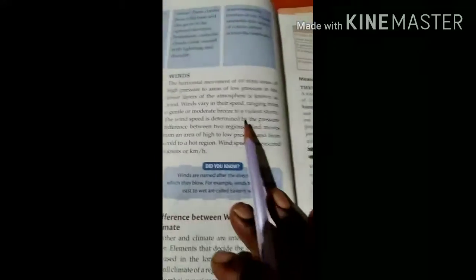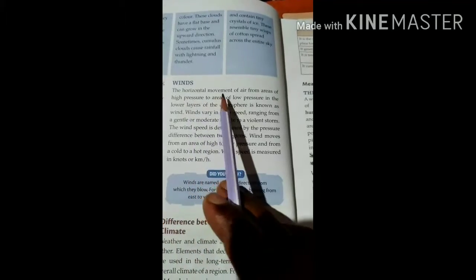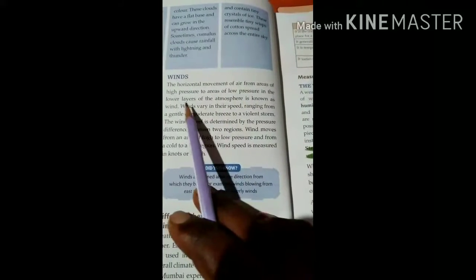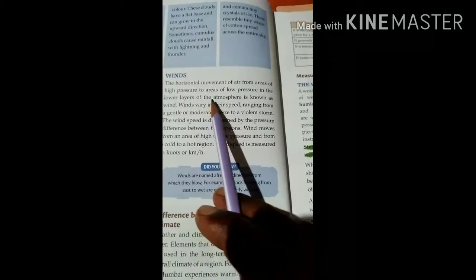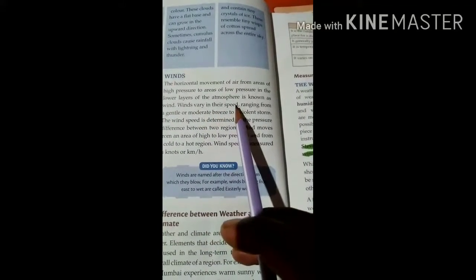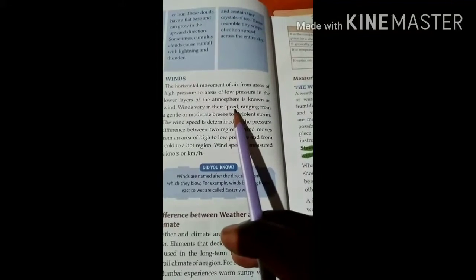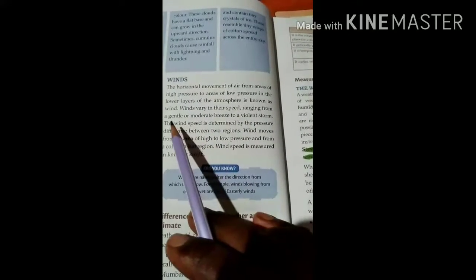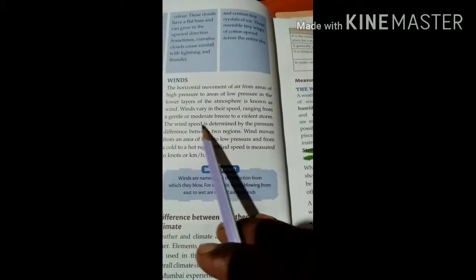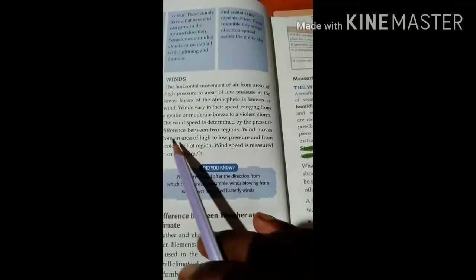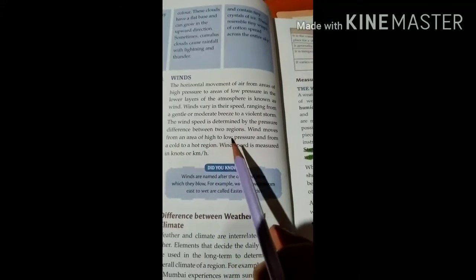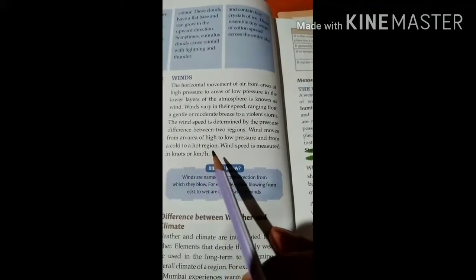Now winds. The horizontal movement of air from areas of high pressure to areas of low pressure in the lower layer of the atmosphere is known as wind. Winds vary in their speed. Wind ranges from a gentle or moderate breeze to a violent storm. Wind speed is determined by the pressure difference between two regions. Wind moves from an area of high to low pressure and from a cold to a hot region.